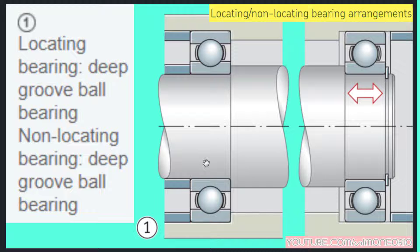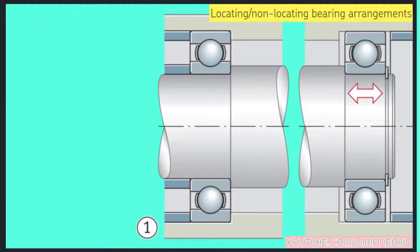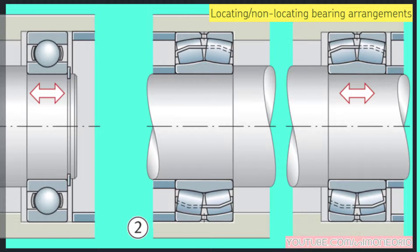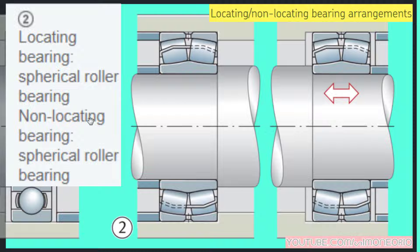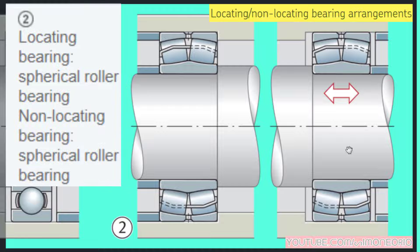The second example: the locating bearing is a spherical roller bearing and the non-locating bearing is also a spherical roller bearing. The locating bearing is all blocked, but the non-locating bearing can slide — you can see the gap on the top.